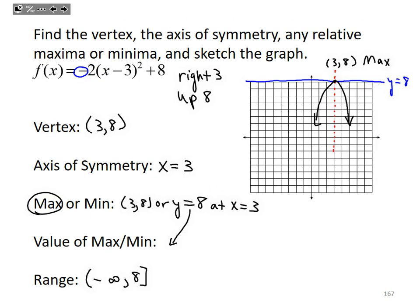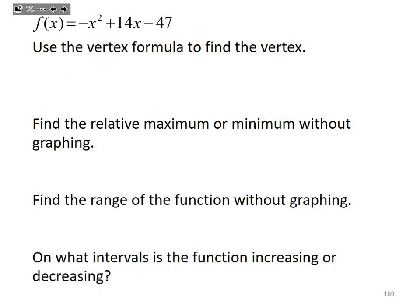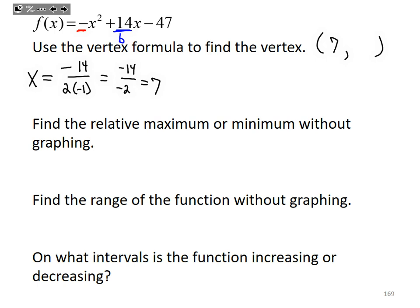Let's look at an example: f(x) = -x² + 14x - 47. I can't just look at that and identify the vertex, so I need to use the -b over 2a formula since it's given as three separate terms. Here b = 14 and a = -1. To find x: take the negative of b, which is -14, divided by 2 times a, which is 2 times -1. That gives -14 divided by -2, which equals positive 7. So the vertex is at (7, something).